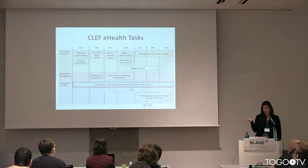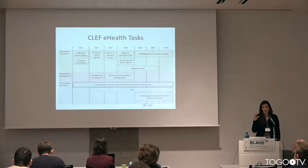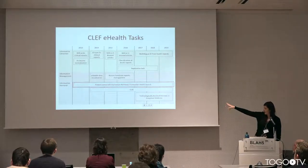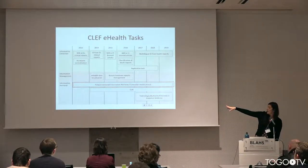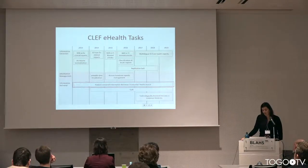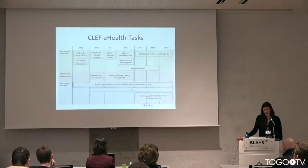The information retrieval category is perhaps the easiest to describe, as more or less the same tasks have been running for years. Consumer health search and cross-lingual information retrieval involve searching the web for information given an English or other language query against English documents. We also have technologically assisted reviews in empirical medicine, which is a search task where you're trying to find all relevant information — so the goals are a bit different.